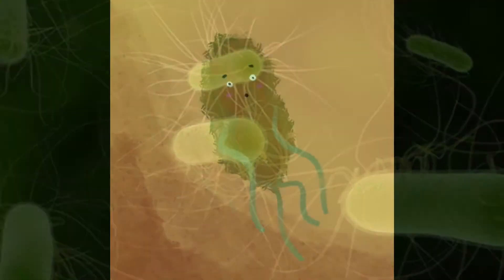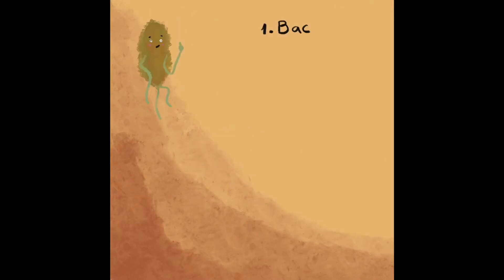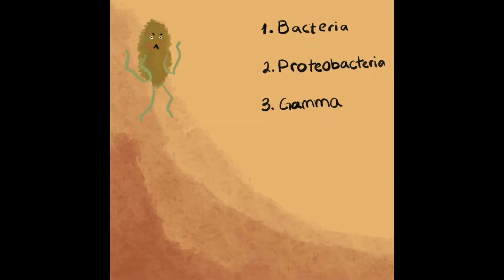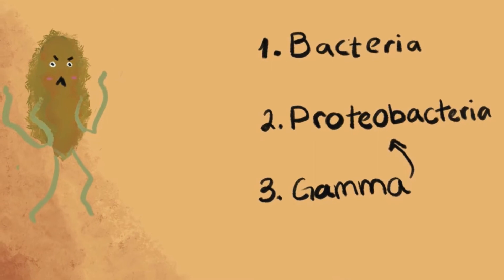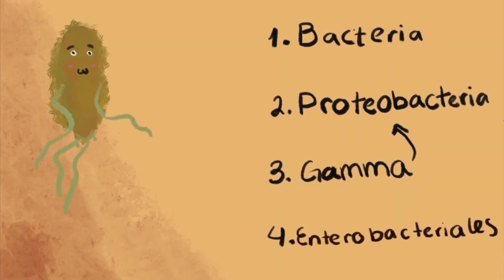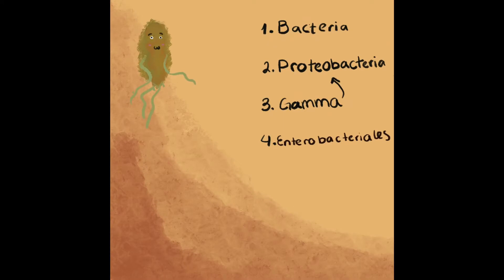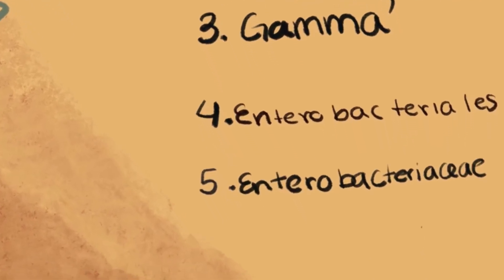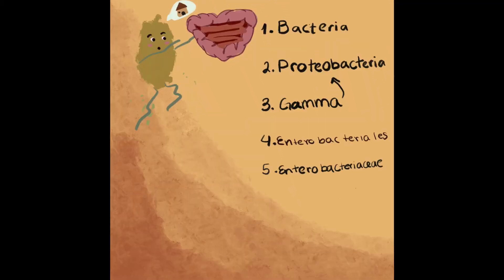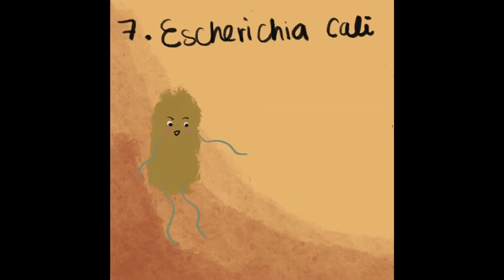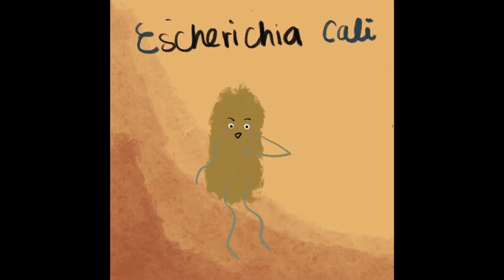Taxonomy: its domain is bacteria. It belongs to the phylum proteobacteria. Its class is gamma proteobacteria. The order of E. coli is enterobacterials. It belongs to the family enterobacteriaceae. This family lives in the intestinal tract. The genus is Escherichia and the species is Escherichia coli — this is where the E. coli name comes from.